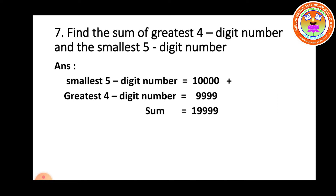When we add: ones place 0 plus 9 is 9, tens place 0 plus 9 is 9, hundreds place 0 plus 9 is 9, thousands place 0 plus 9 is 9, remaining 10,000 place 1 itself. So we got the answer 19,999.